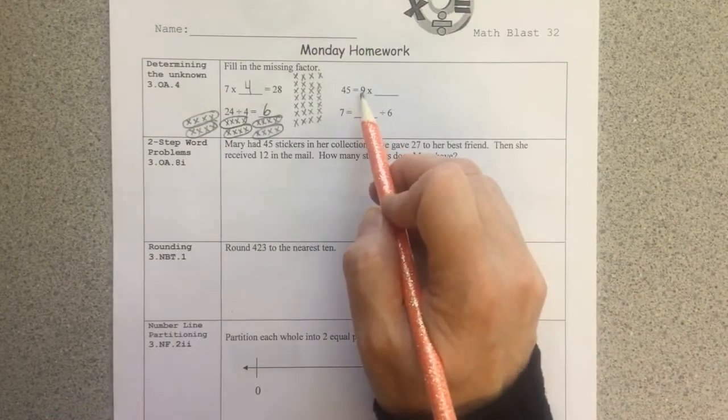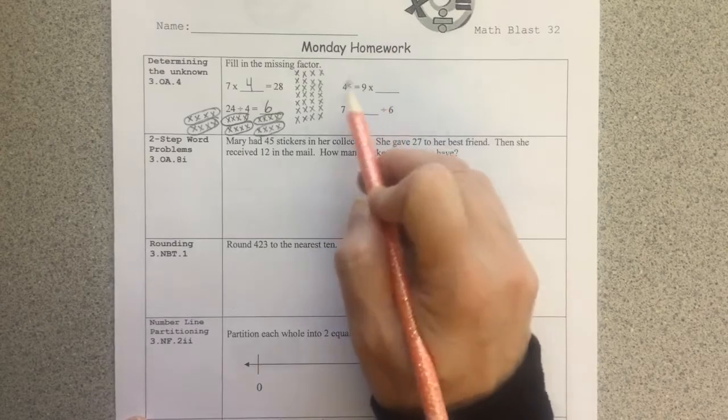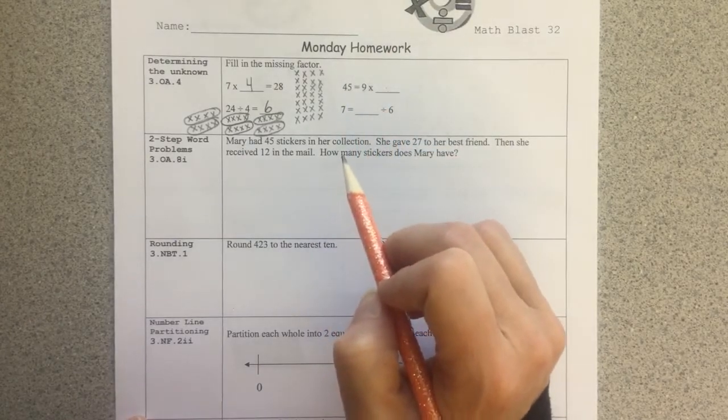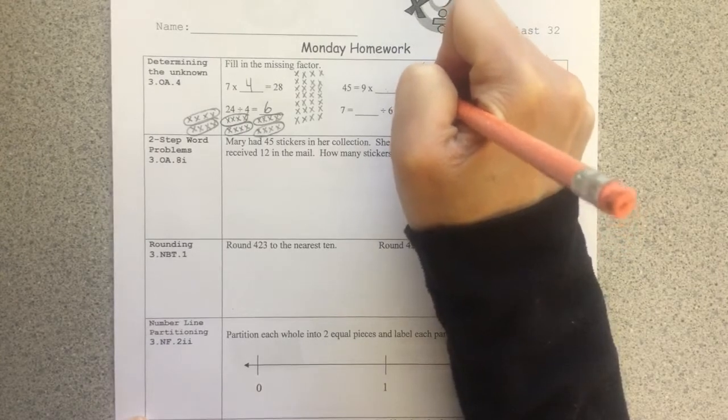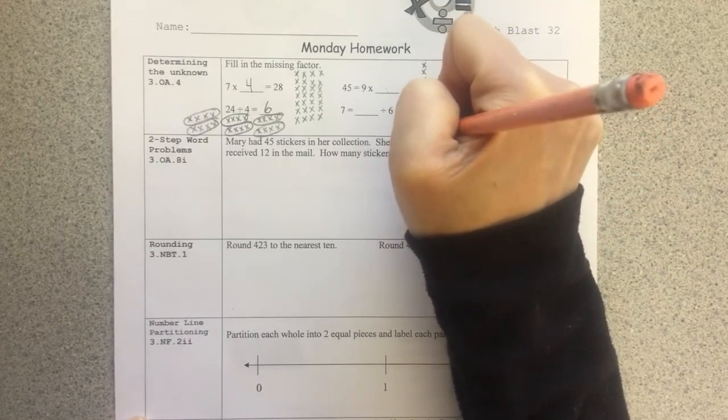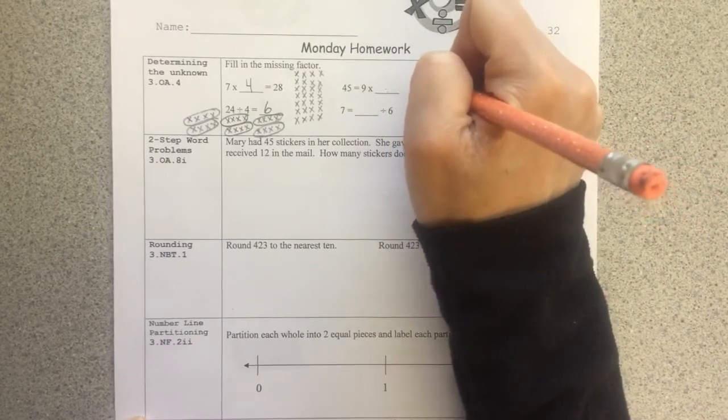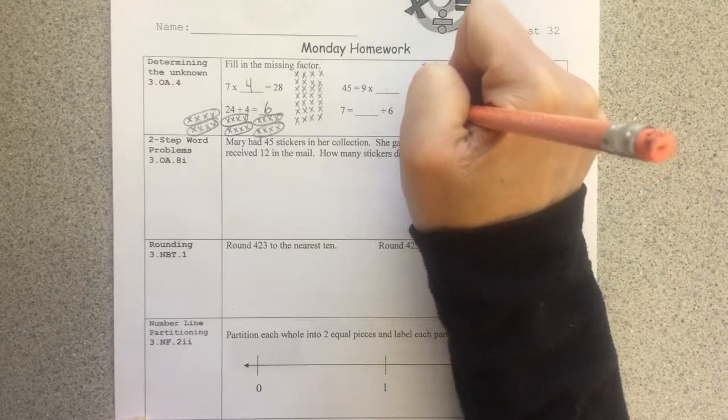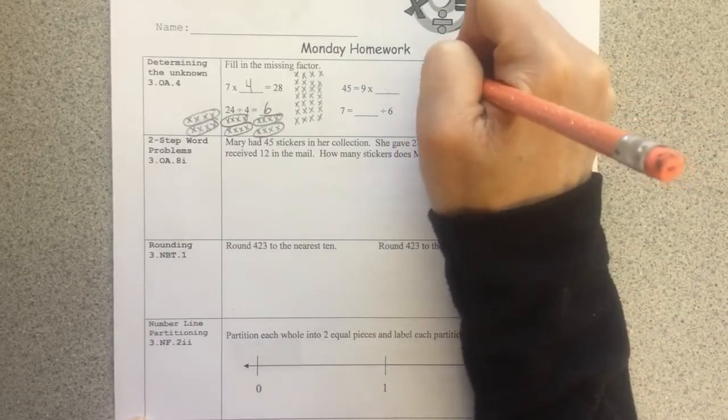45 is equal to 9 times what? 9 groups of what is 45. That's what we're really looking at here. So I can again draw an array with 9 rows. Those rows are representing my groups. I have 9 rows there and I'm going to continue to put x's in my rows until I get a total of 45 x's.